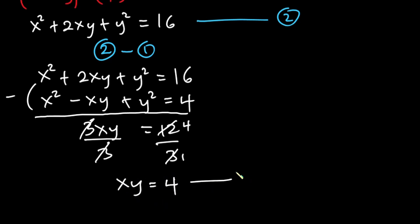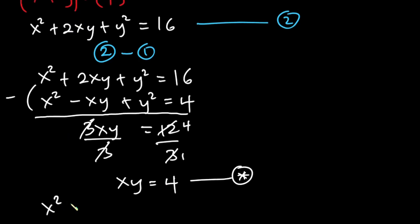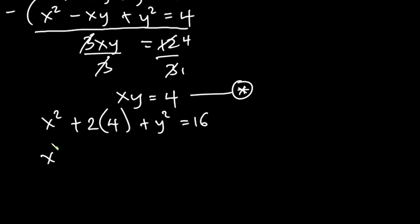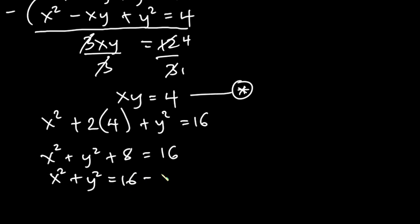I'm going to call this equation star. From here we can substitute xy into equation 2: x squared plus 2xy plus y squared equals 16. Since xy is 4, we have x squared plus 2 times 4 plus y squared equals 16, so x squared plus y squared plus 8 equals 16. Making x squared plus y squared the subject, we get x squared plus y squared is equal to 8.